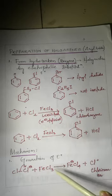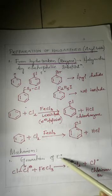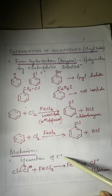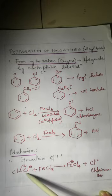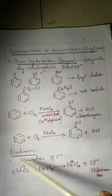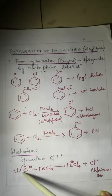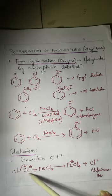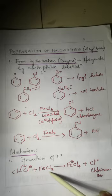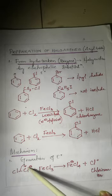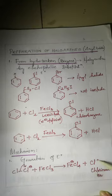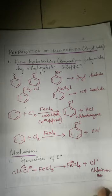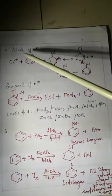The mechanism involves three steps. Step one is the generation of the electrophile. Cl2 in bond form reacts with ferric chloride FeCl3. One chlorine gets a negative charge and combines to form FeCl4 minus, while the other chlorine carries a positive charge, forming the Cl+ electrophile.